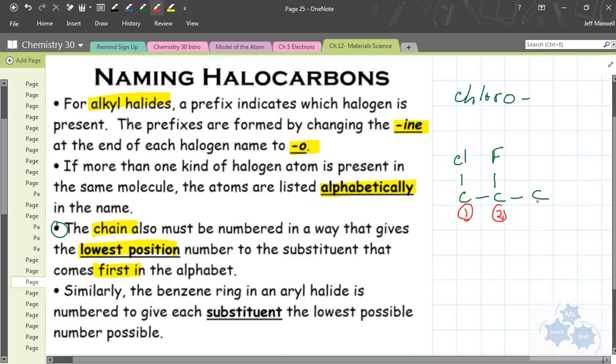But we'll get into naming, I'll show you some examples here in a second. Let's talk about the benzene ring here. Similarly, the benzene ring in an aryl halide is numbered to give each substituent, that is, each one of the halogens, the lowest number possible. So a benzene ring is numbered to give each substituent the lowest possible number. That's a bit of a redundant phrase I see right there. Awesome.